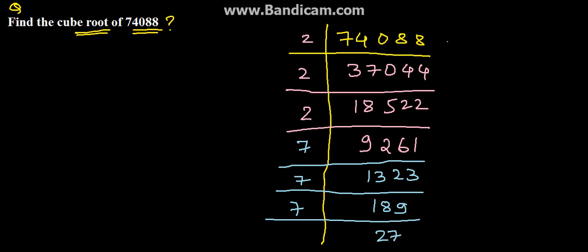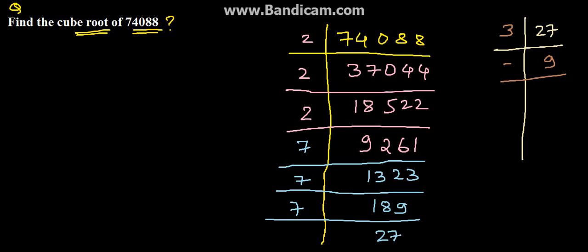Now here we have 27, so we need to divide it again. 27 can be divided by 3: 3 nines will be 27, 3 threes will be 9, and 3 ones will be 3.